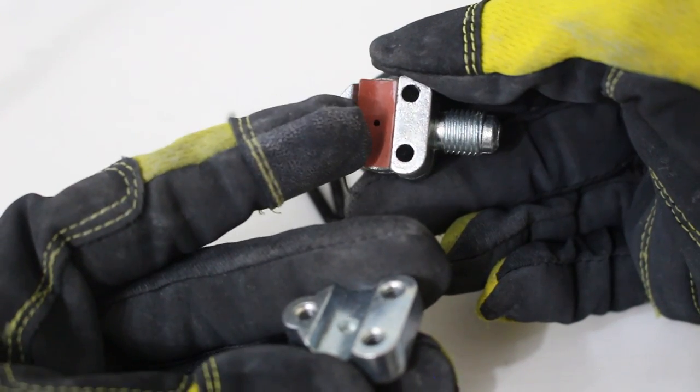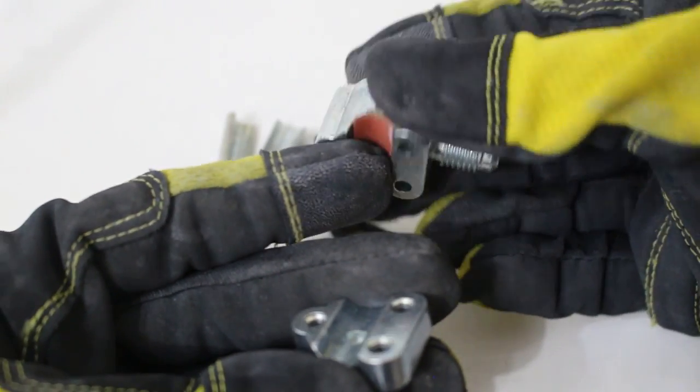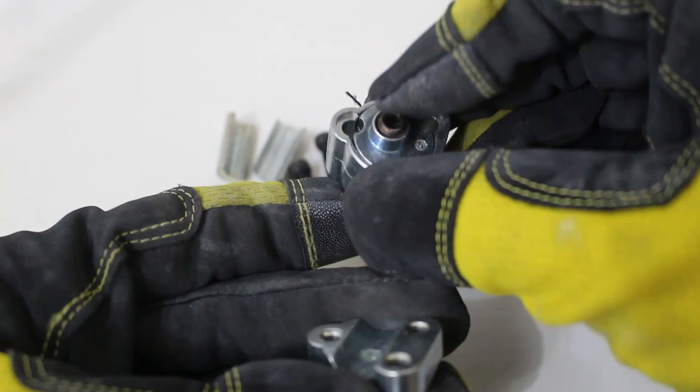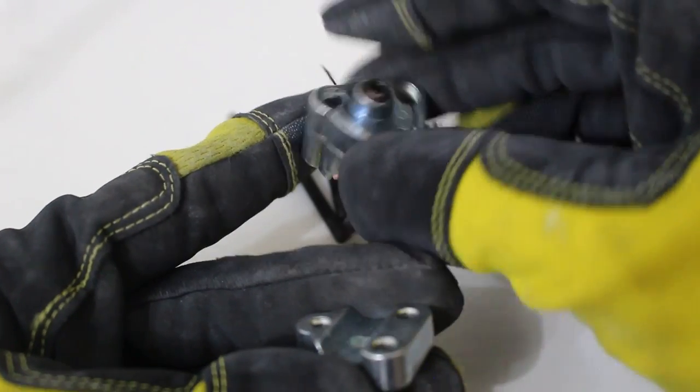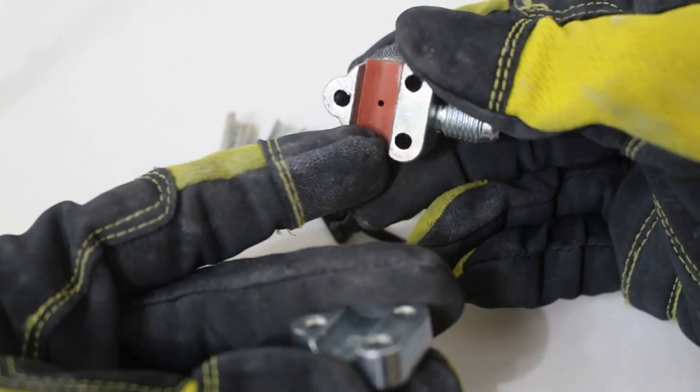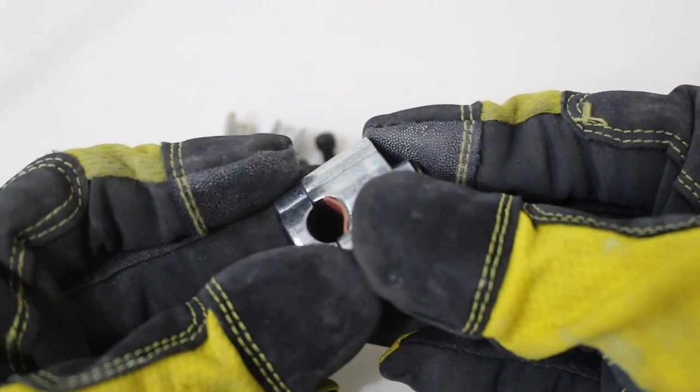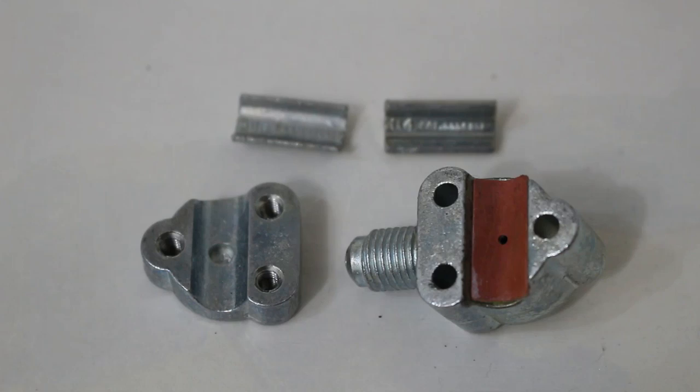As you can see here, we have a gasket and a hole. As we screw down on this middle Allen key, we're going to pierce the pipe. And this, we wrap around the pipe.